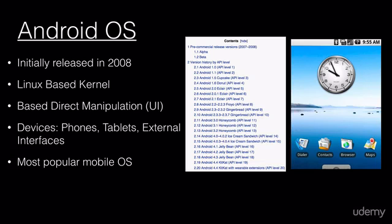Android is an operating system available nowadays on multiple platforms. It was initially released back in 2008 for mobile phones and is based on a Linux-based kernel. It's a very secure and very flexible software that nowadays you can find on tablets, cell phones, TV set-top boxes, TVs in general, and many other devices, as Google has made it widely available across the board.